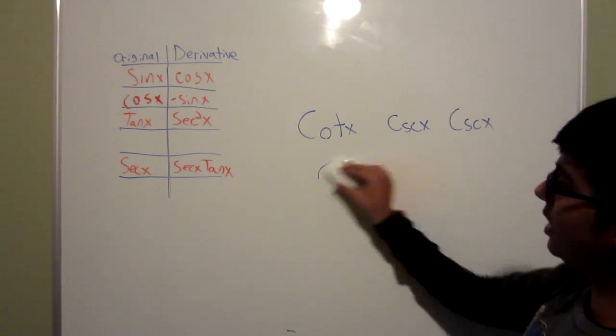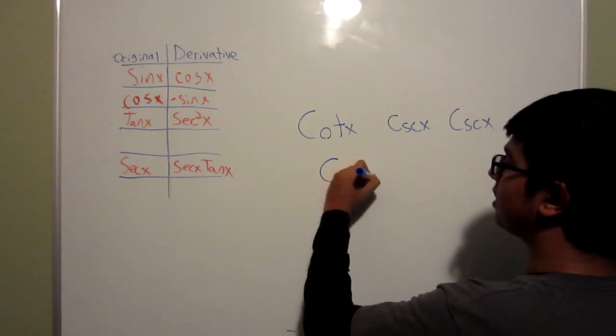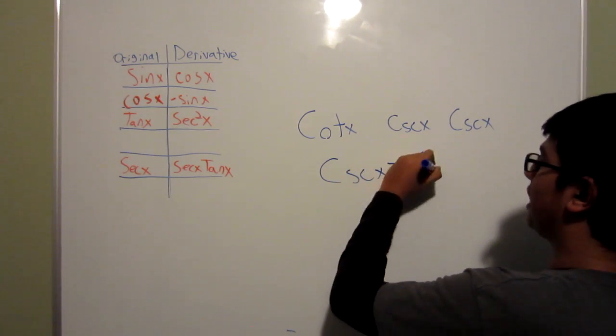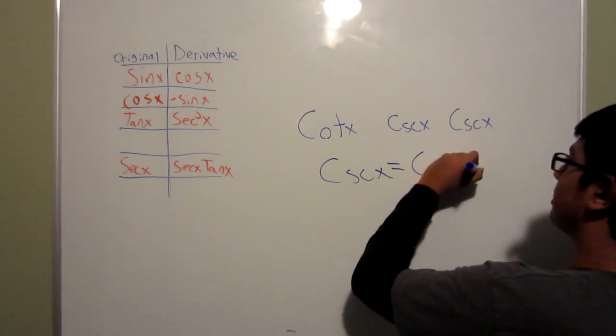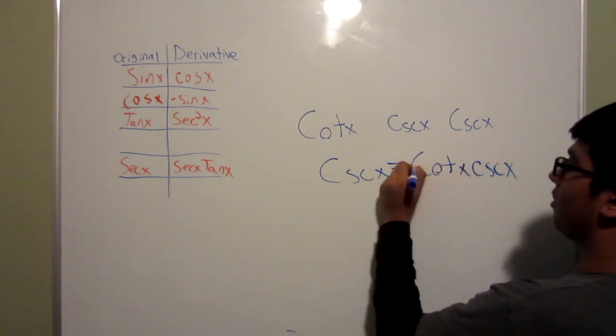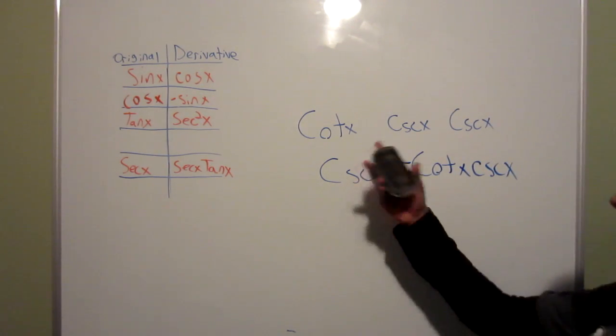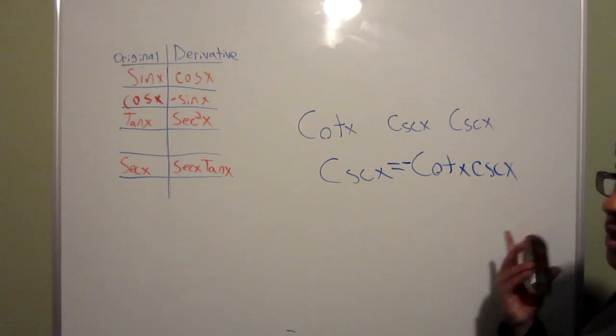The same applies with cosecant. If you start off with one cosecant, you get cotangent x, cosecant x, and of course negative because it is a form of sine.